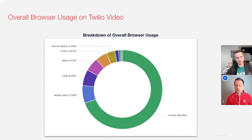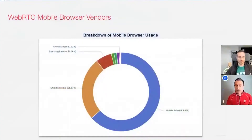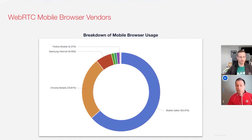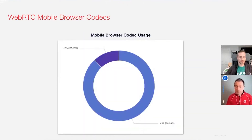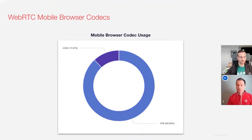It's grown from tiny, tiny numbers. If we drill in one level deeper, you'll see that mobile Safari dominates at roughly 64%. Chrome on mobile is lower at 26%, and then we have Samsung, Firefox, and a few others at smaller numbers. Another interesting aspect is the VP8 codec usage — very high in relation to H.264, but we still see some H.264 traffic as well, and we'll talk about that a little bit later.